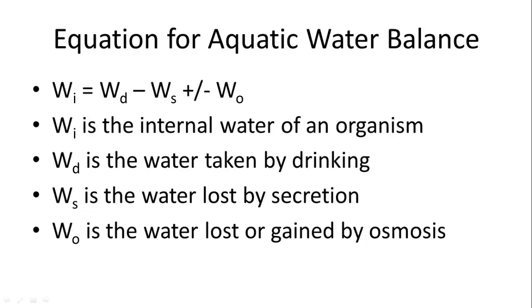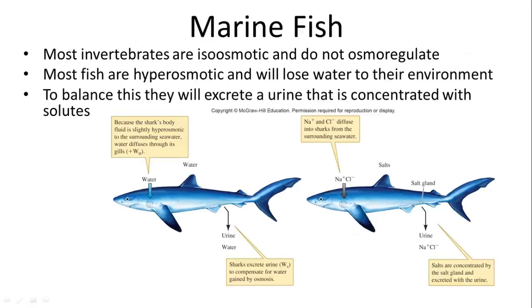So the equation for the aquatic water balance is the internal water of an organism equal the amount of water that it drinks, minus the water lost by secretion, plus or minus the water loss or gained by osmosis. Most invertebrates are isoosmotic, so they don't have to worry about this. But fish are hyperosmotic in marine environments, and will lose water to their environment. To balance this, they'll excrete a urine that is very concentrated with solutes. So if they do drink water, they can get the water out of there and release all the salts.